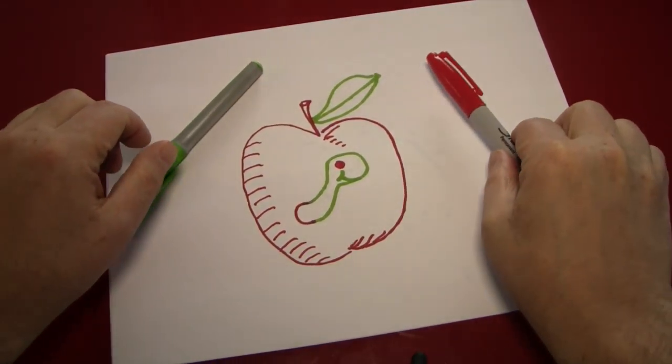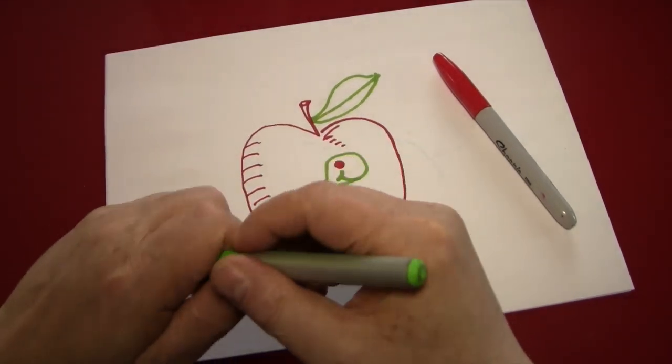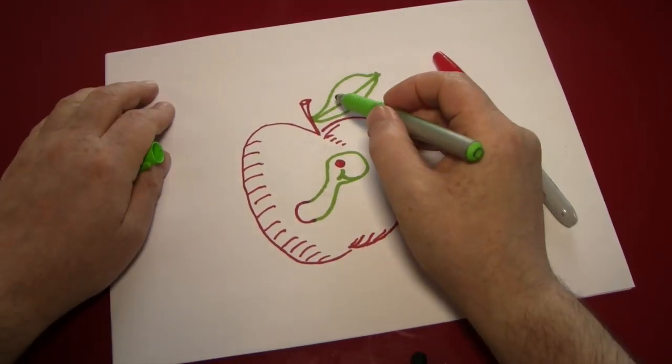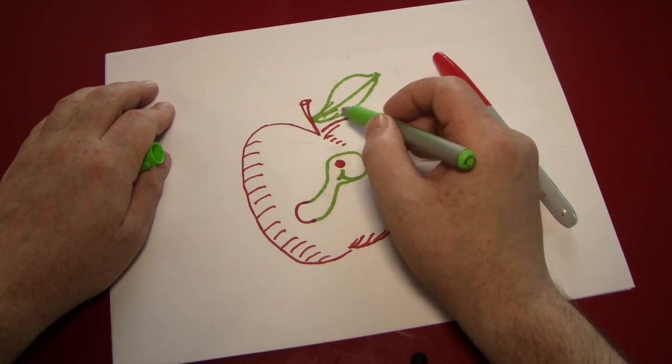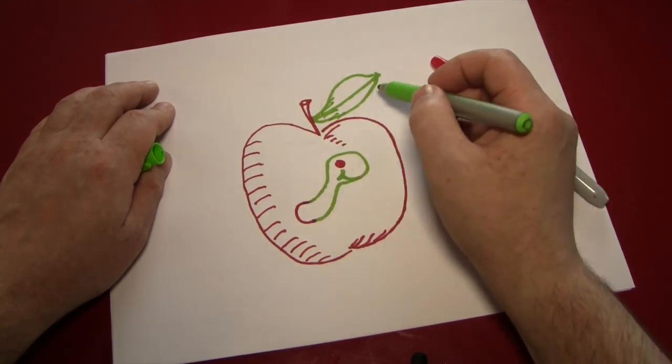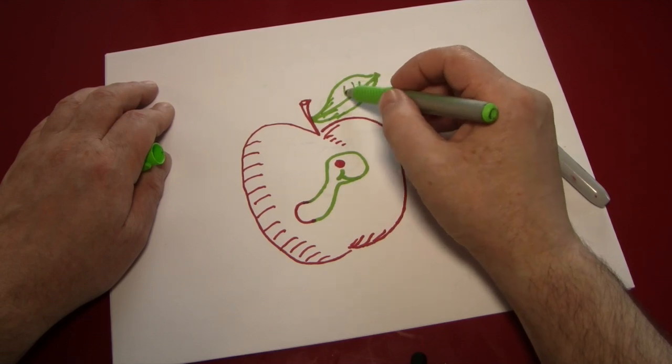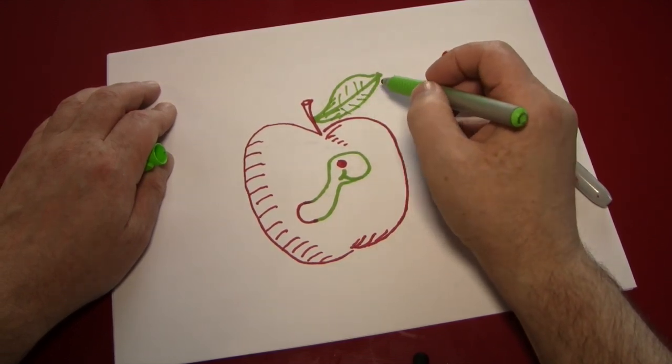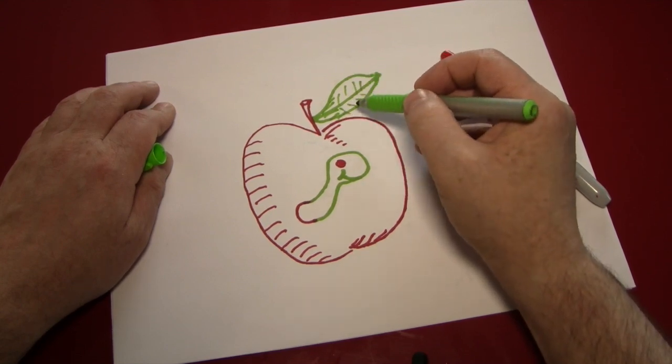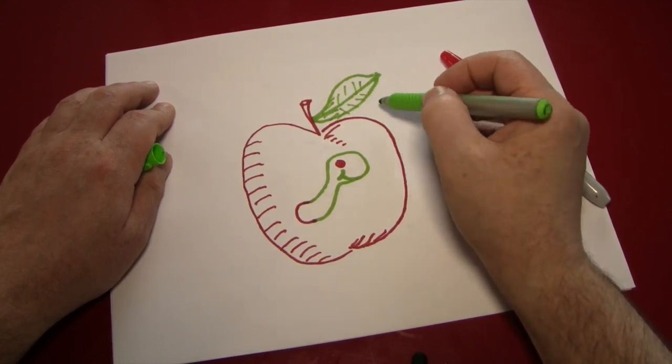Next we'll add a little bit of detailing to the leaf and the worm. A little bit of shadowing. And maybe some veins coming out of the leaf. Like that. Just little lines that branch off from the center going away from the stem.